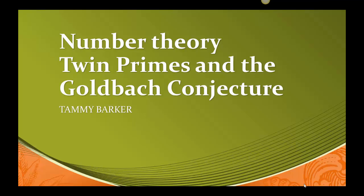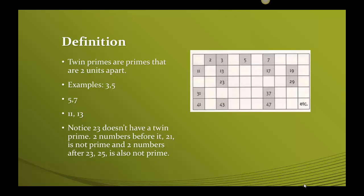In this video, we're going to look at two special things about number 30. One of them is called twin primes, and the other is called the Goldbach Conjecture. Let's start with the definition of twin primes. Twin primes are primes that are two units apart.